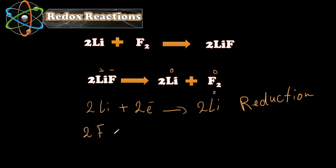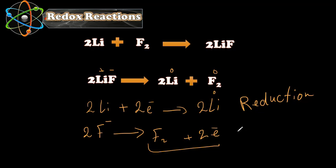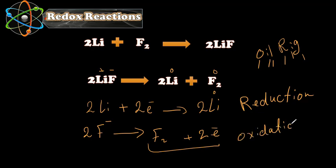For fluorine in the reverse reaction: 2F⁻ gives F2 plus two electrons. The electrons are after the arrow — on the product side — so fluorine lost electrons. OIL RIG: losing is oxidation. So this is now oxidation. Previously fluorine was reduced; now it is oxidized.